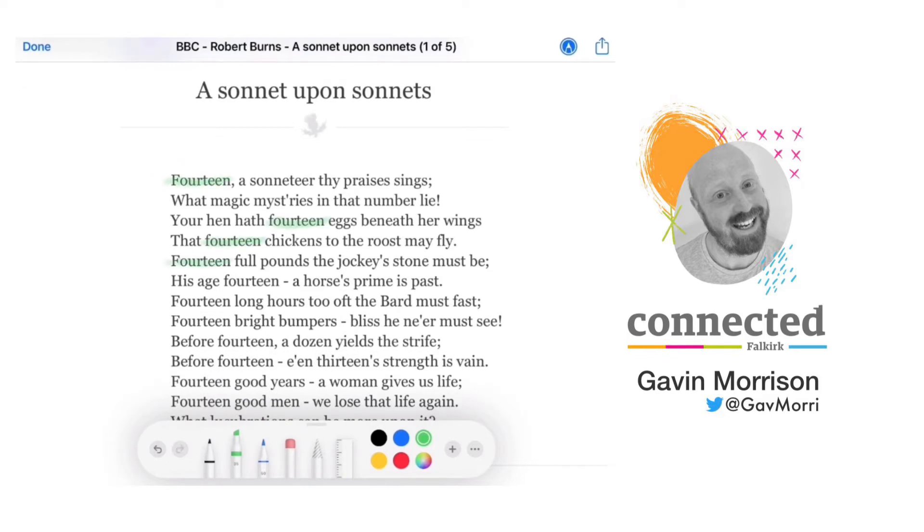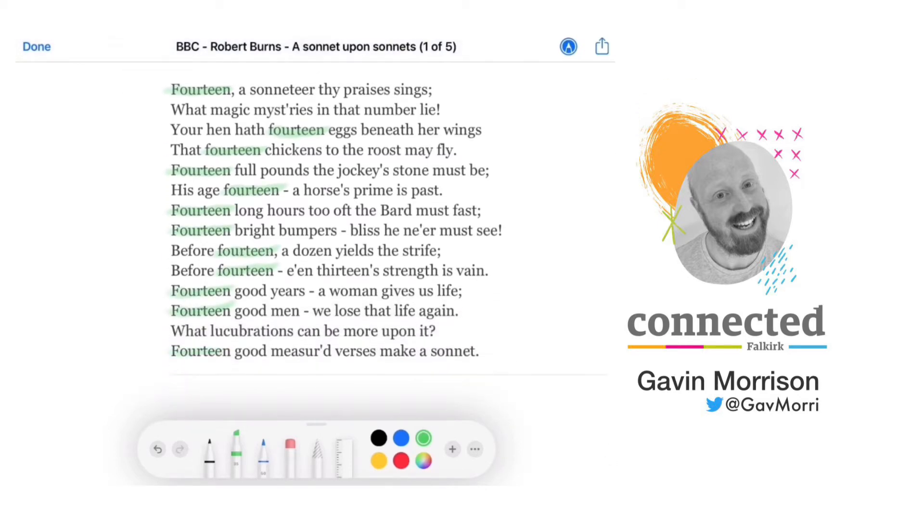So here I'm just going to use the green highlighter option to pick out the examples of repetition and highlight the use of the word fourteen throughout this sonnet by Robert Burns.